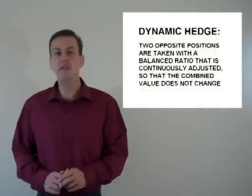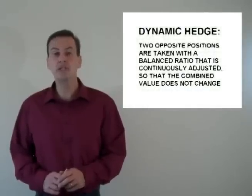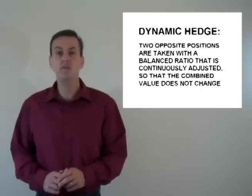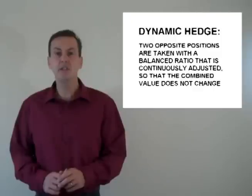To prove this theory, Black and Scholes, along with the help of Robert Merton, developed something known as a dynamic hedge — a theoretical way to remove all risk by taking two opposite positions in the market in such a way that both positions are perfectly hedged. When the market moves, one position increases in value the exact amount that the other position decreases in value.